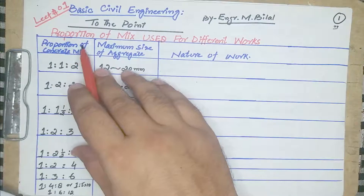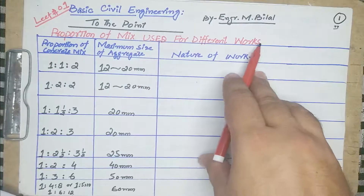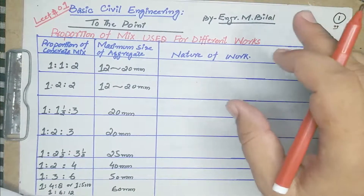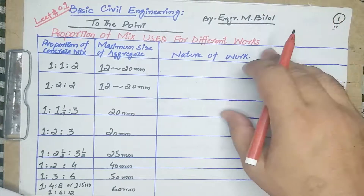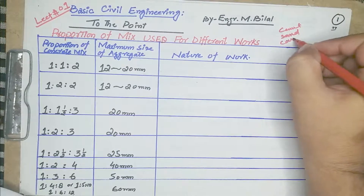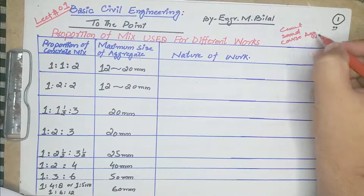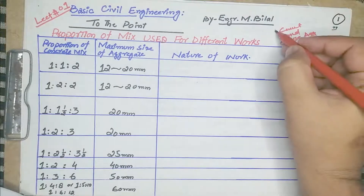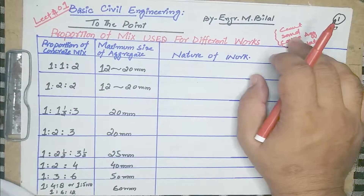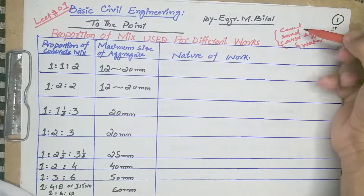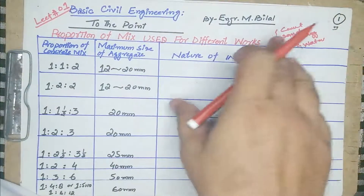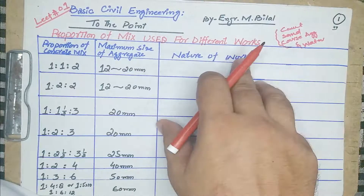Our today's topic is the proportion of mix used for different works, meaning the process of selecting relative proportions of cement, sand, coarse aggregate, and water. These four ingredients are the mix proportions, and by mixing these four items we obtain concrete of desired quality. This is known as proportioning of concrete.